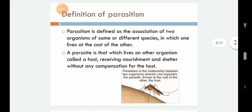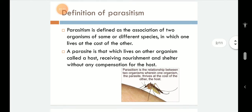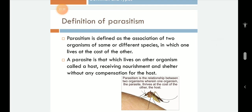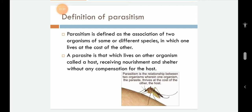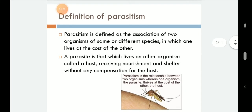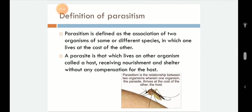A parasite is that which lives on other organisms called a host, receiving nourishment and shelter without any compensation for the host. As we can see in the picture, there is a mosquito sucking blood from the host — humans or any mammalian system. Here the female mosquito, not the male mosquito, only females suck blood, just once in their lifetime. The blood is consumed to provide nourishment for the young ones when they hatch out — to be more precise, for the eggs.